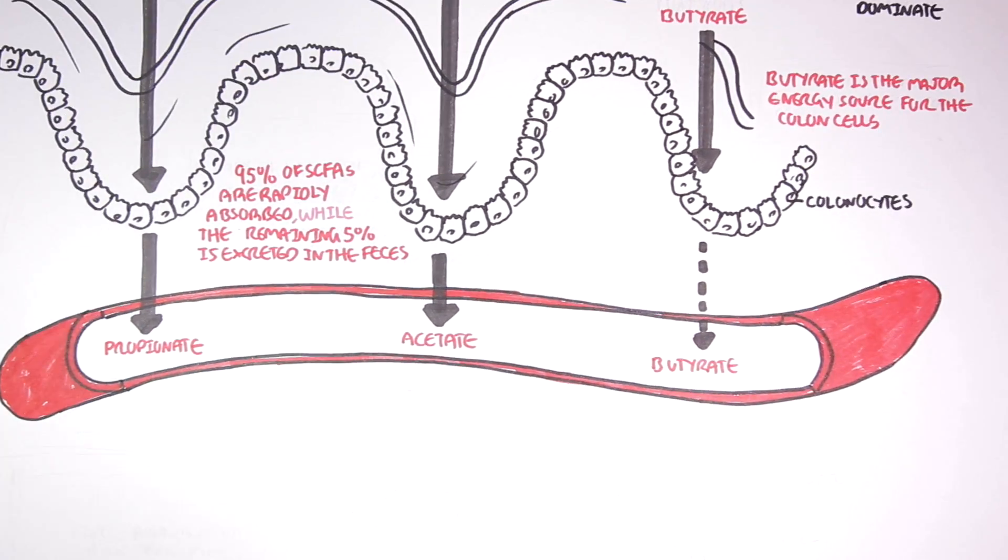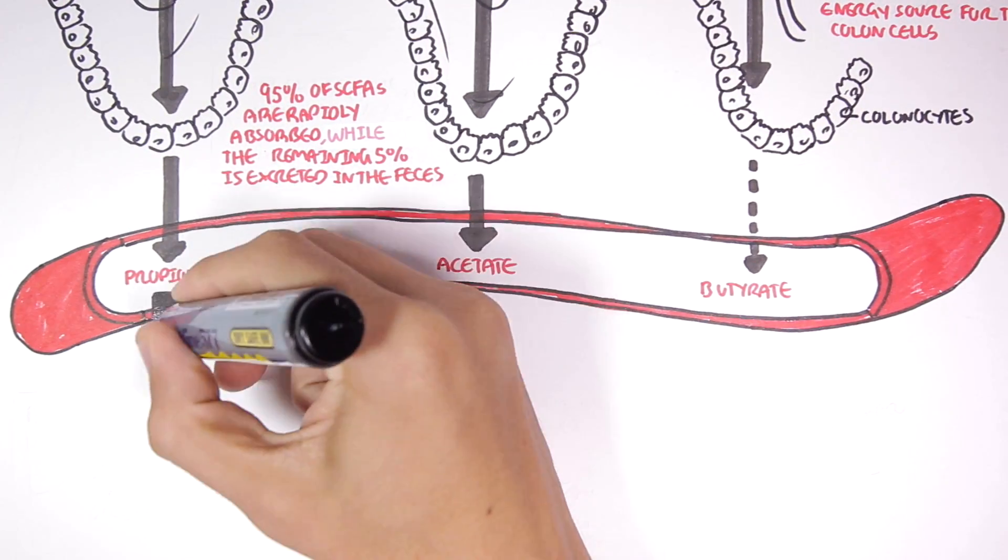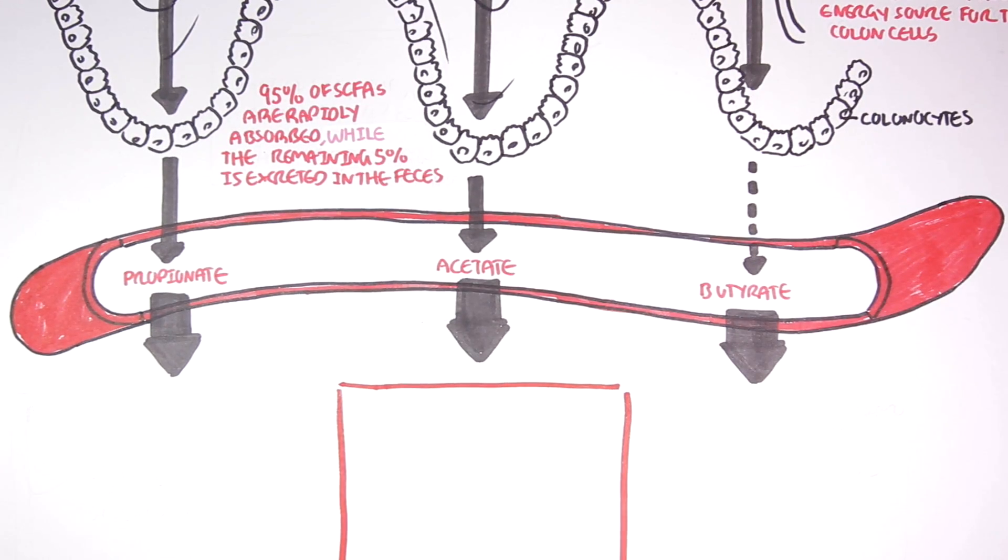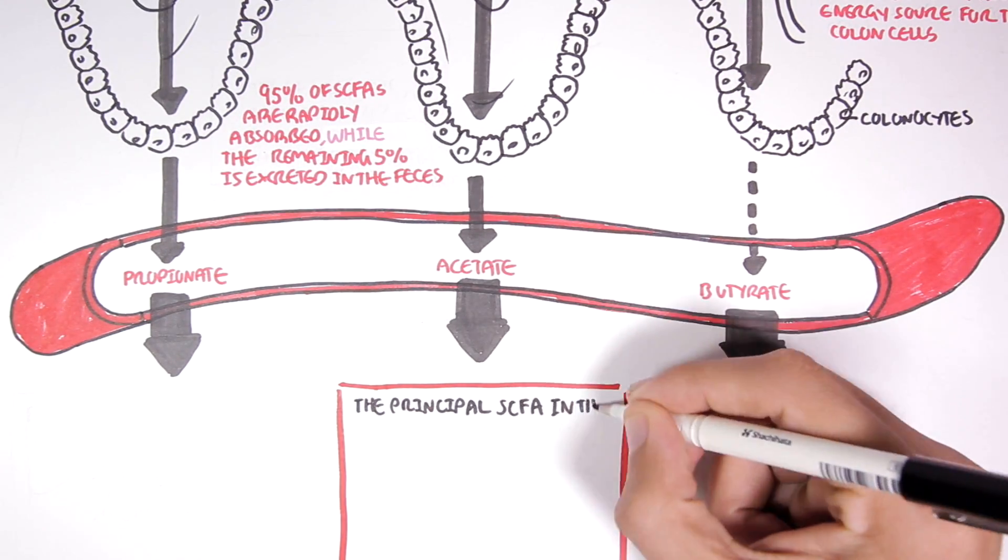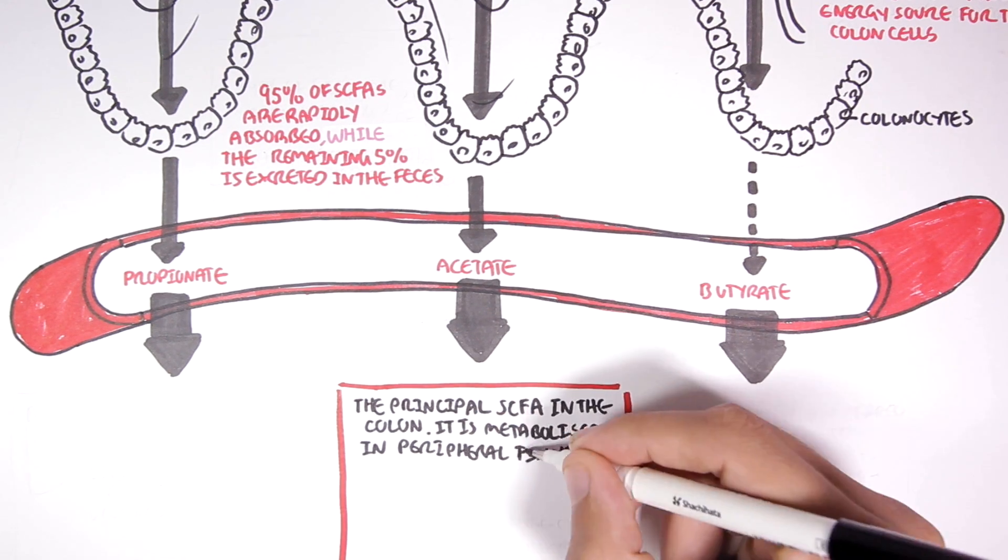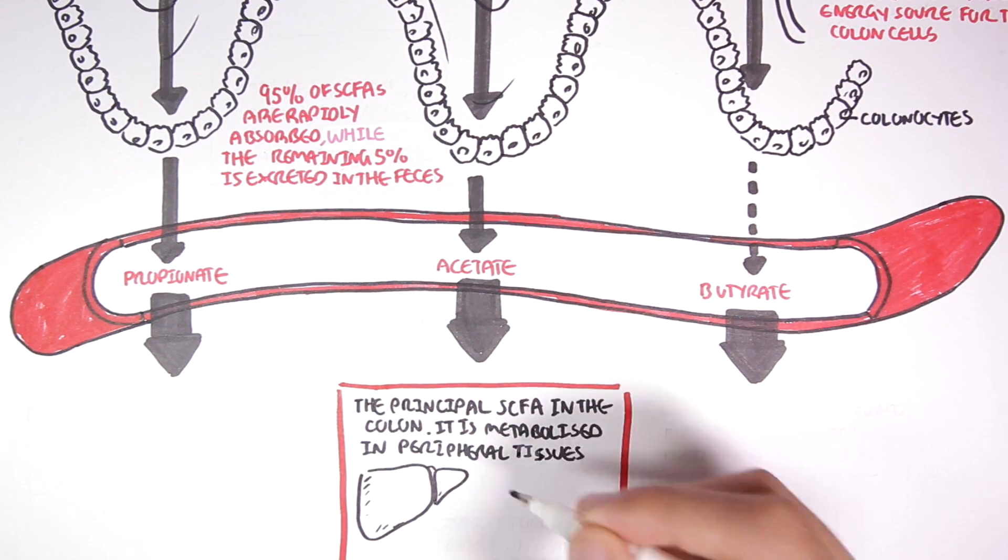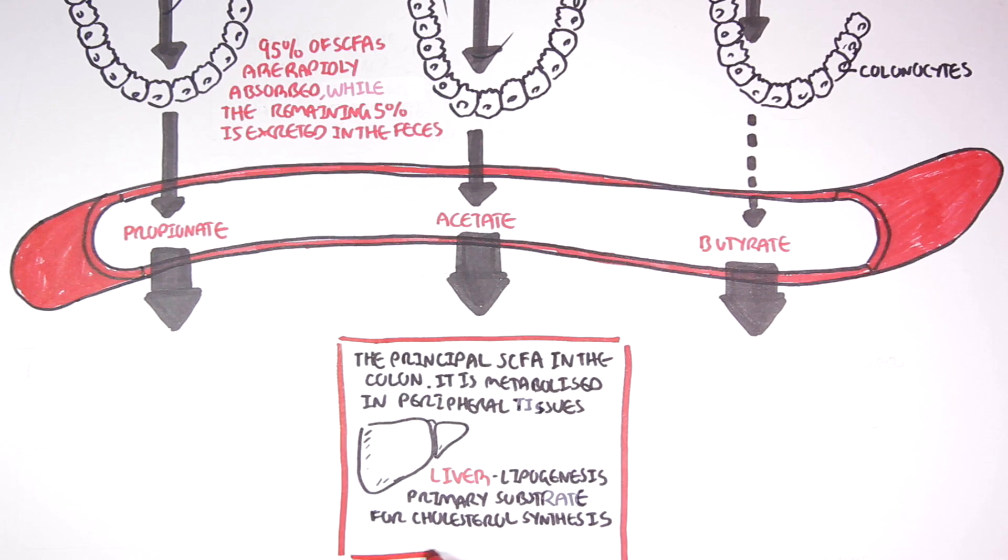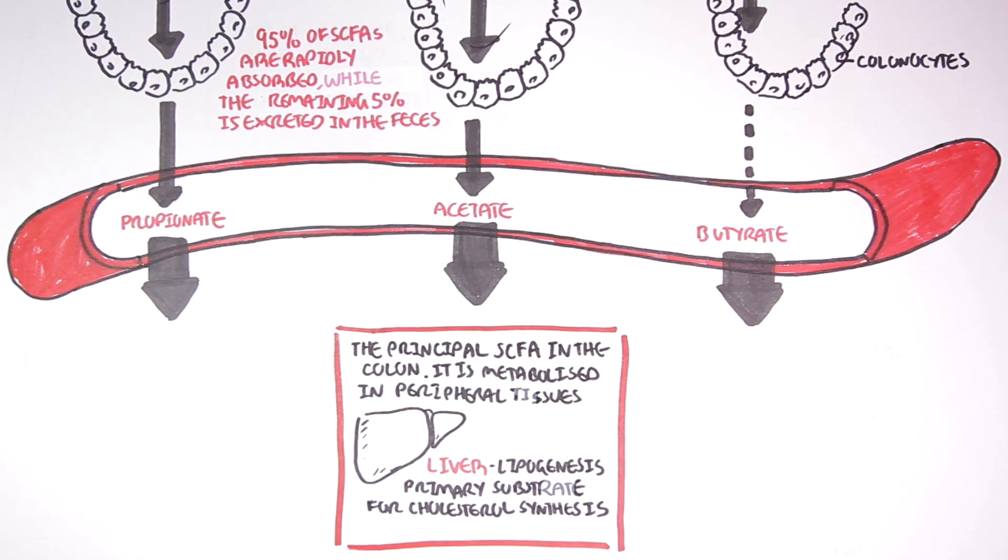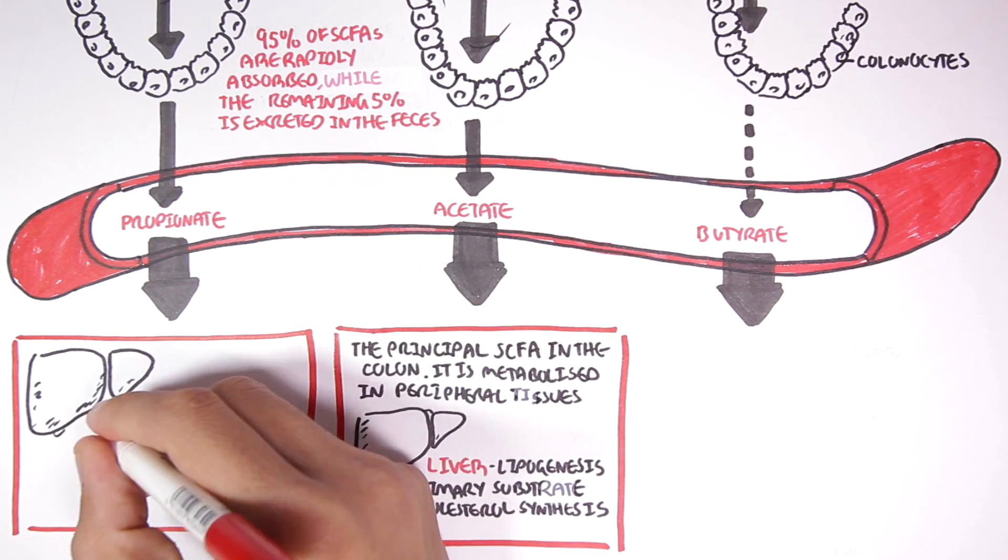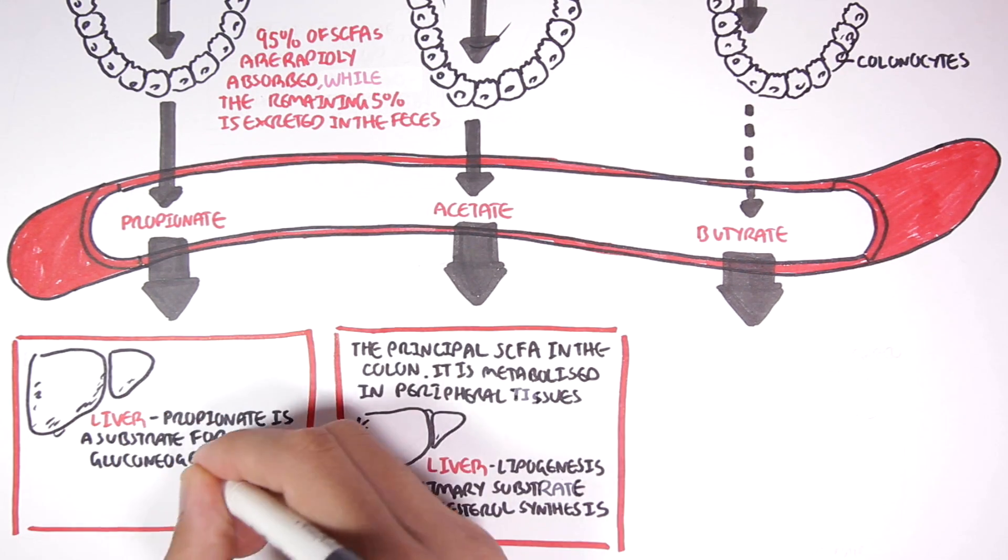Now, let's briefly find out the fates of the short-chain fatty acids. So acetate is the principal short-chain fatty acid in the colon. It is metabolized in peripheral tissues. In the liver, acetate has shown to stimulate lipogenesis, the synthesis of fats. Acetate is also the primary substrate for cholesterol synthesis. Propionate travels to the liver, and is used as a substrate for gluconeogenesis.